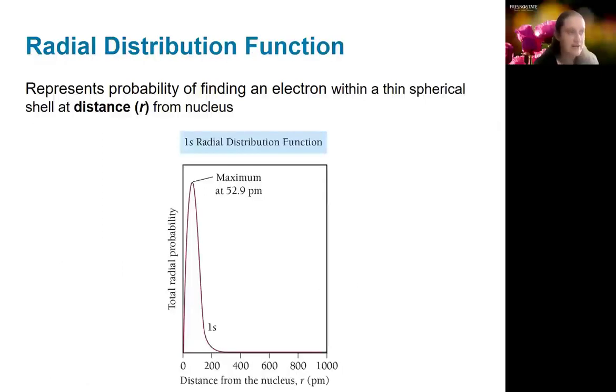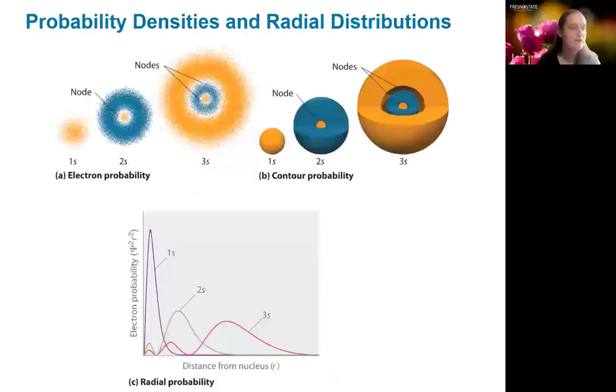Here's just that radial distribution function shown in another way. Depending on the shape of the wave function, that radial probability distribution function may include nodes. As you increase and go up in energy, you're going to get more nodes. And that's going to be reflected in this radial probability distribution function.